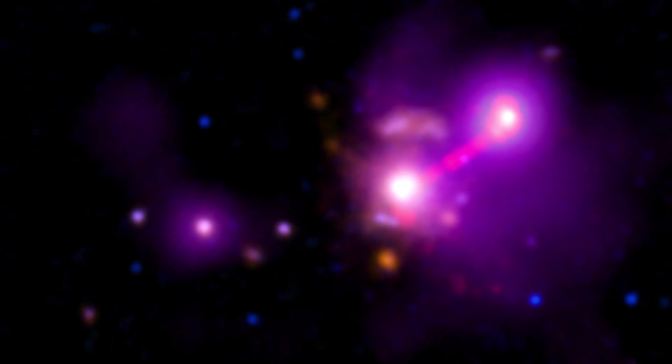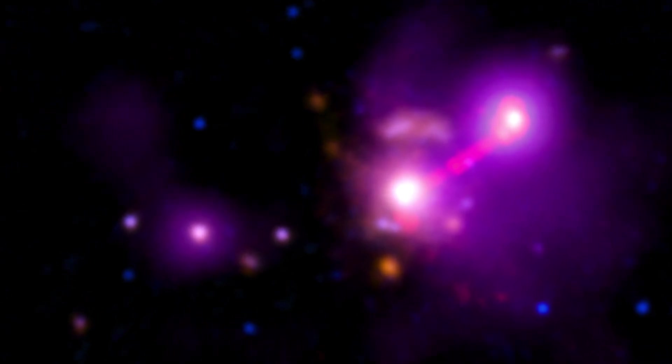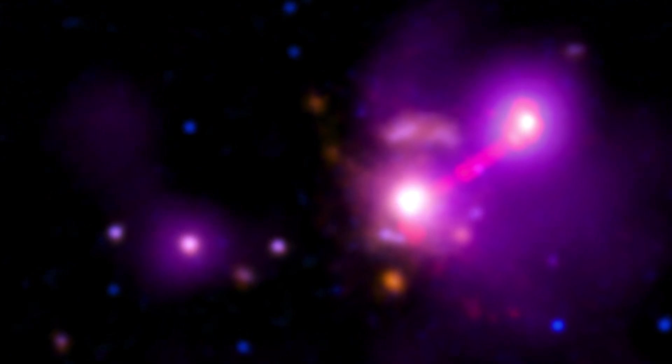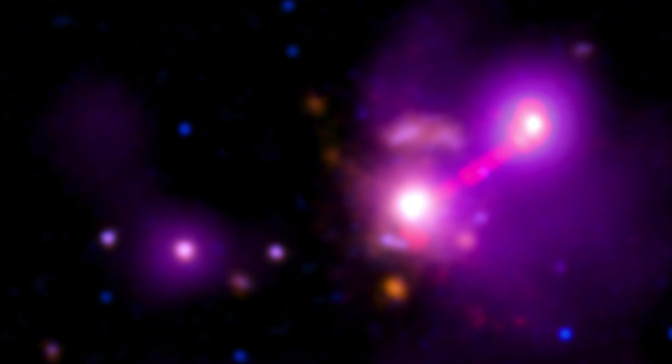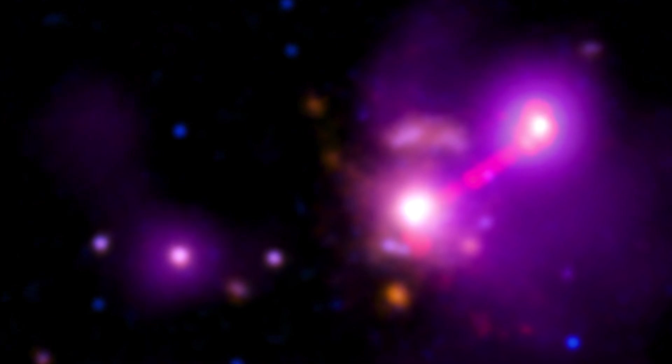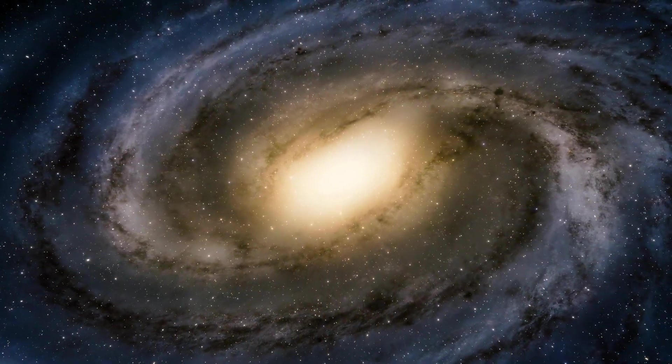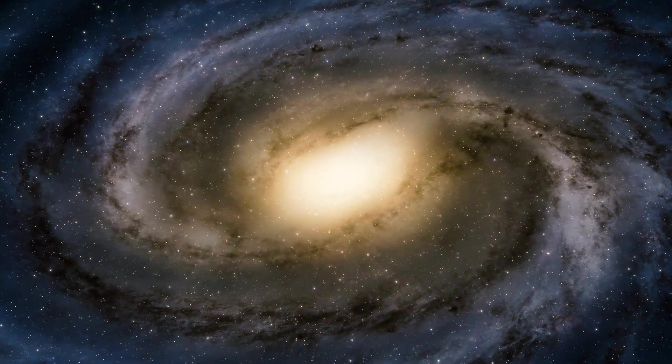Surprisingly, though, there's a neighbor out there, Abel 2744 Y1, that's not only smaller, but boasts a star creation rate ten times speedier than our very own Milky Way. To put it in perspective, it's like the galactic equivalent of a supercharged espresso compared to our morning cup of coffee.